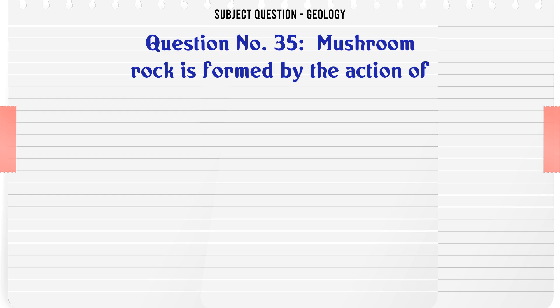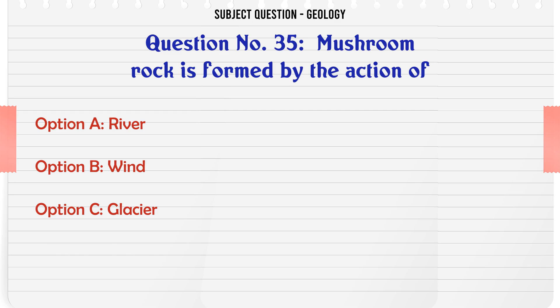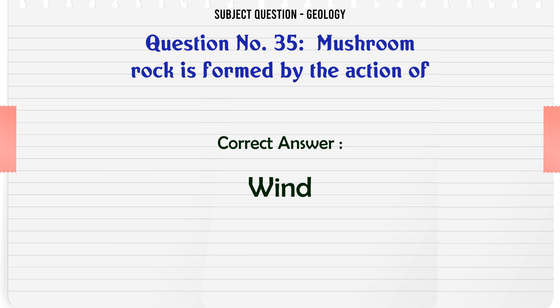Mushroom rock is formed by the action of: A. River. B. Wind. C. Glacier. D. Underground water. The correct answer is Wind.